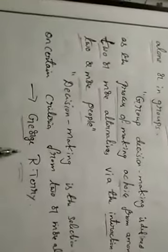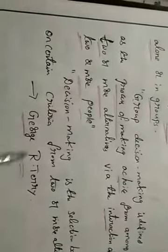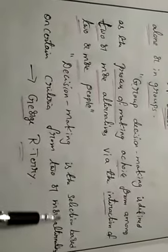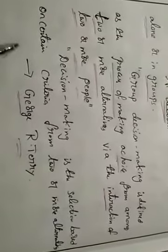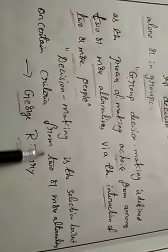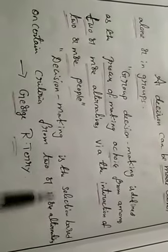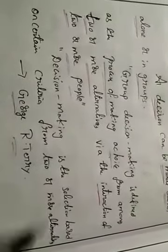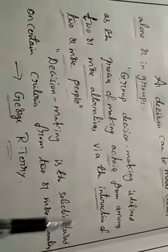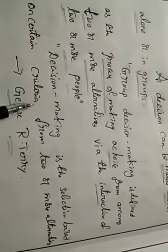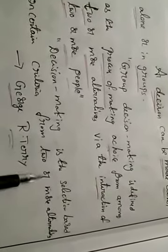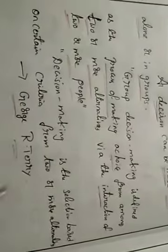According to the definition given by George Terry, decision making is the selection based on certain criteria from two or more alternatives. On the basis of the problem's nature, we have to select certain criteria from two or more alternatives.